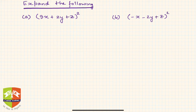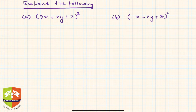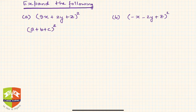Welcome again friends. Let's now try a few questions on trinomial square expansion. The first question is: expand (9x + 2y + z)². We have learned the trinomial square expansion identity.